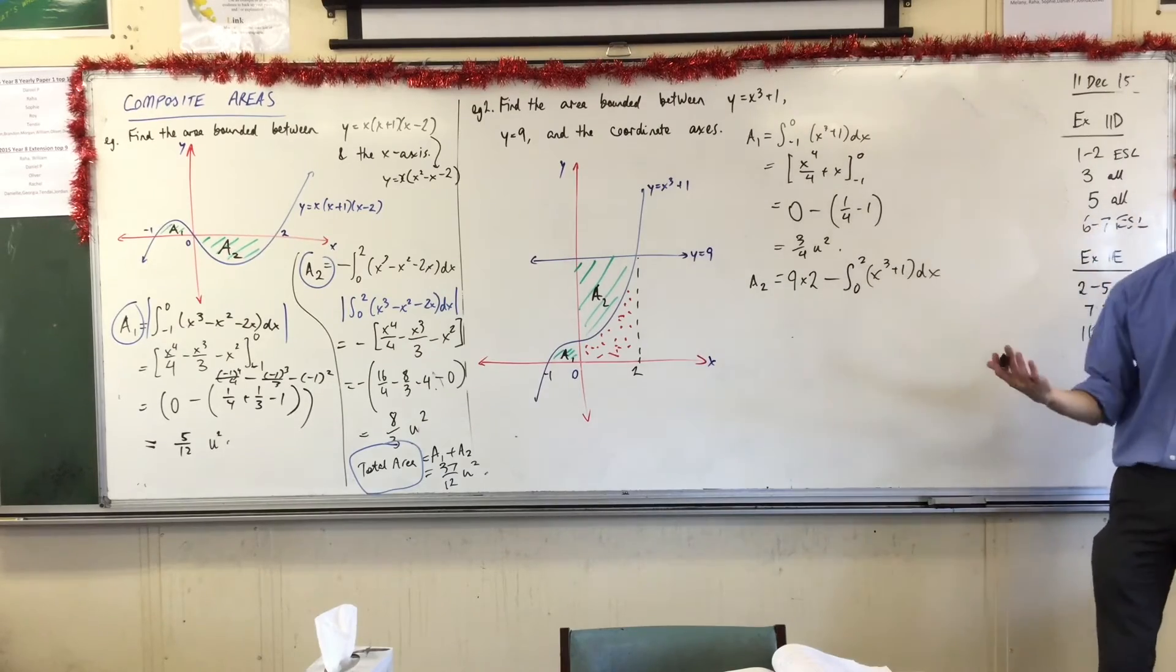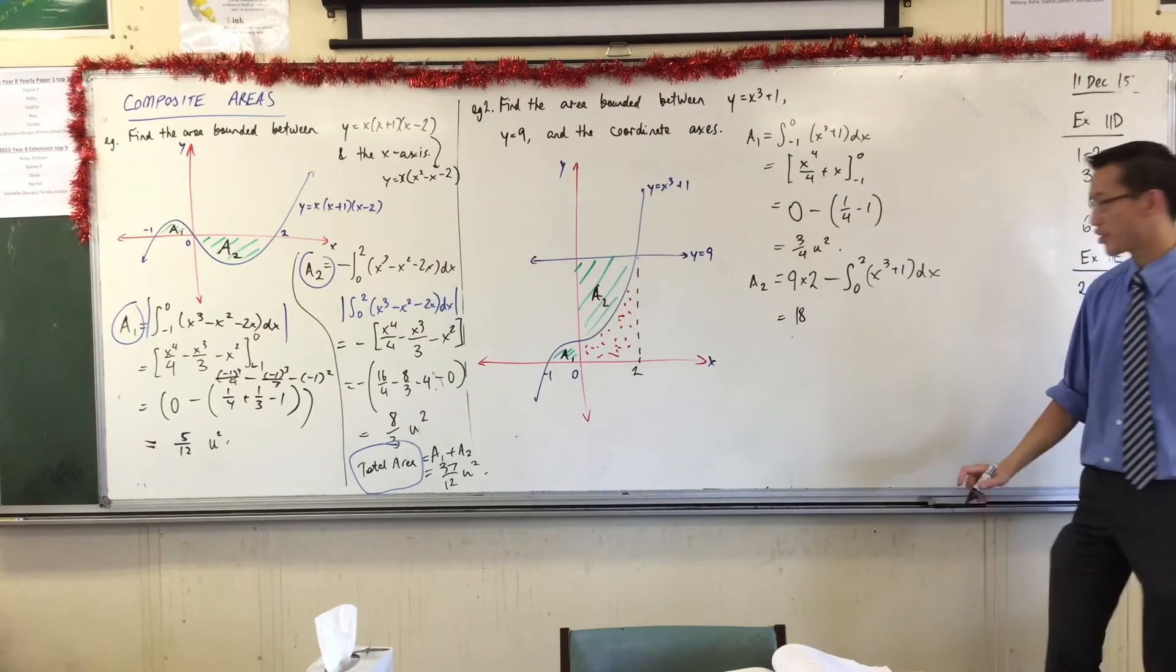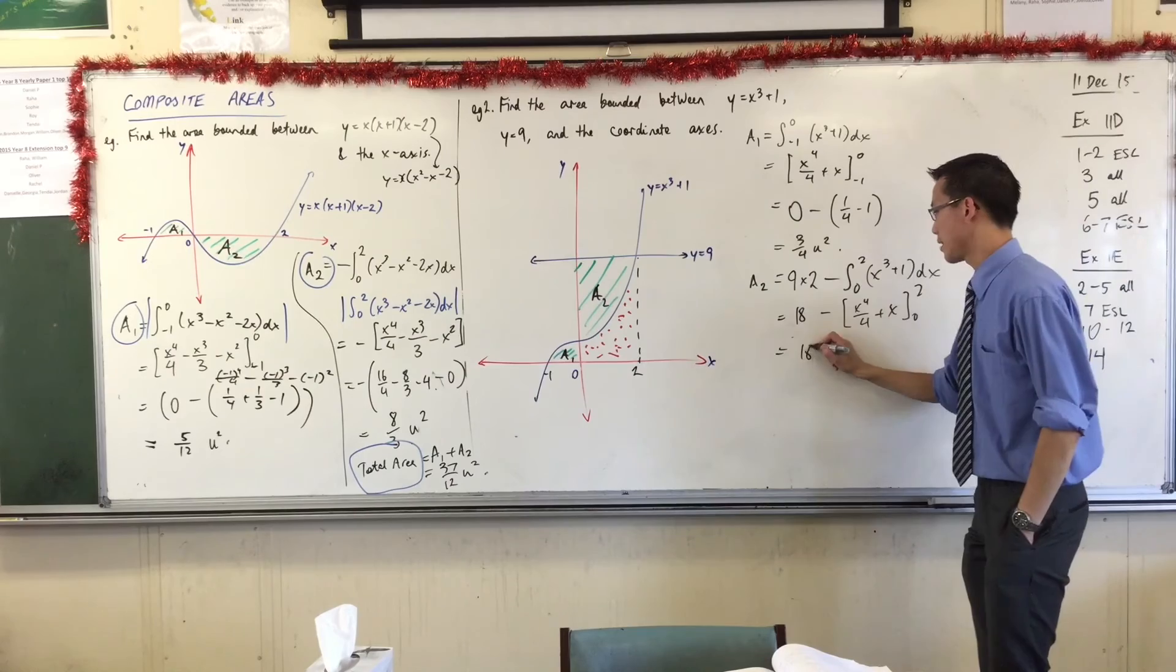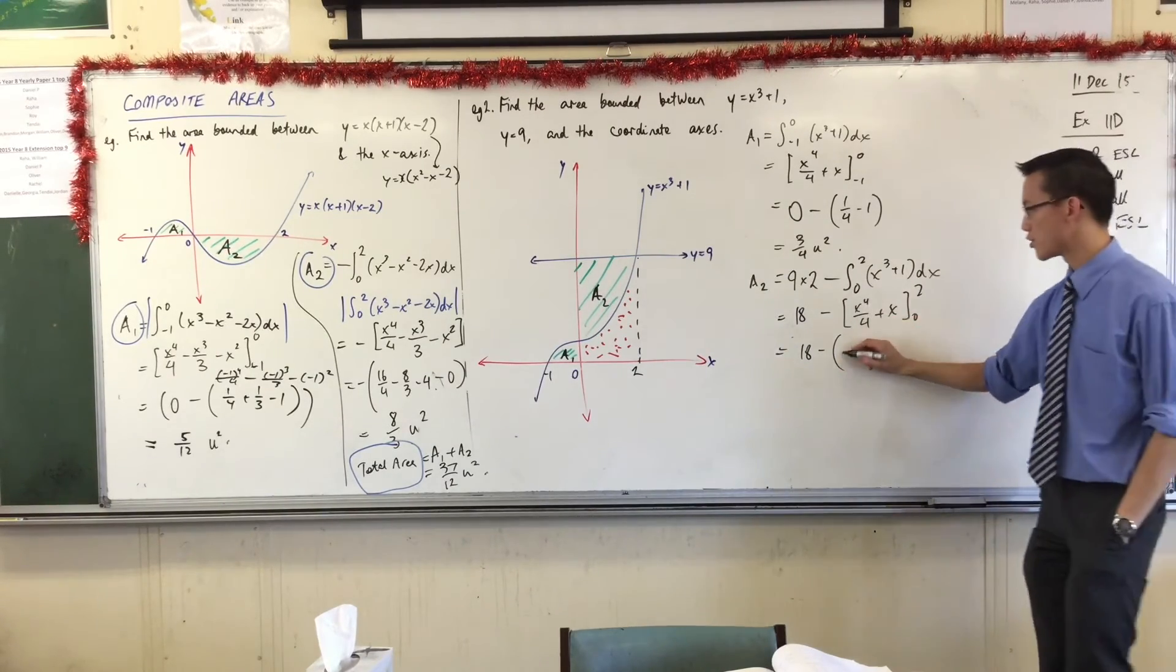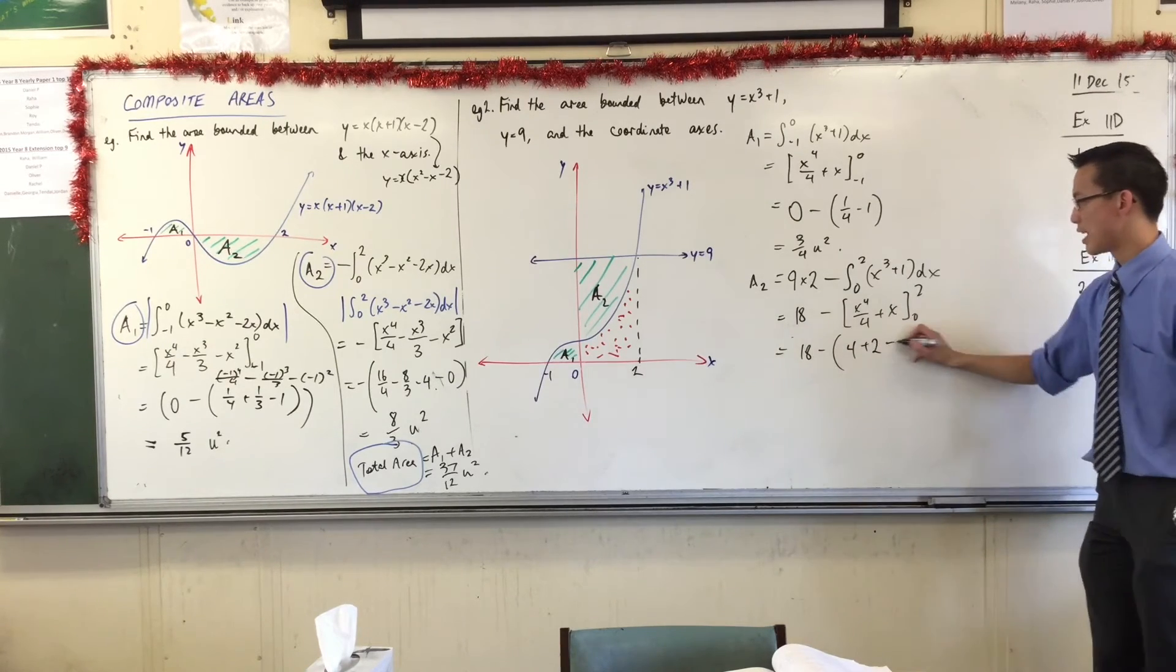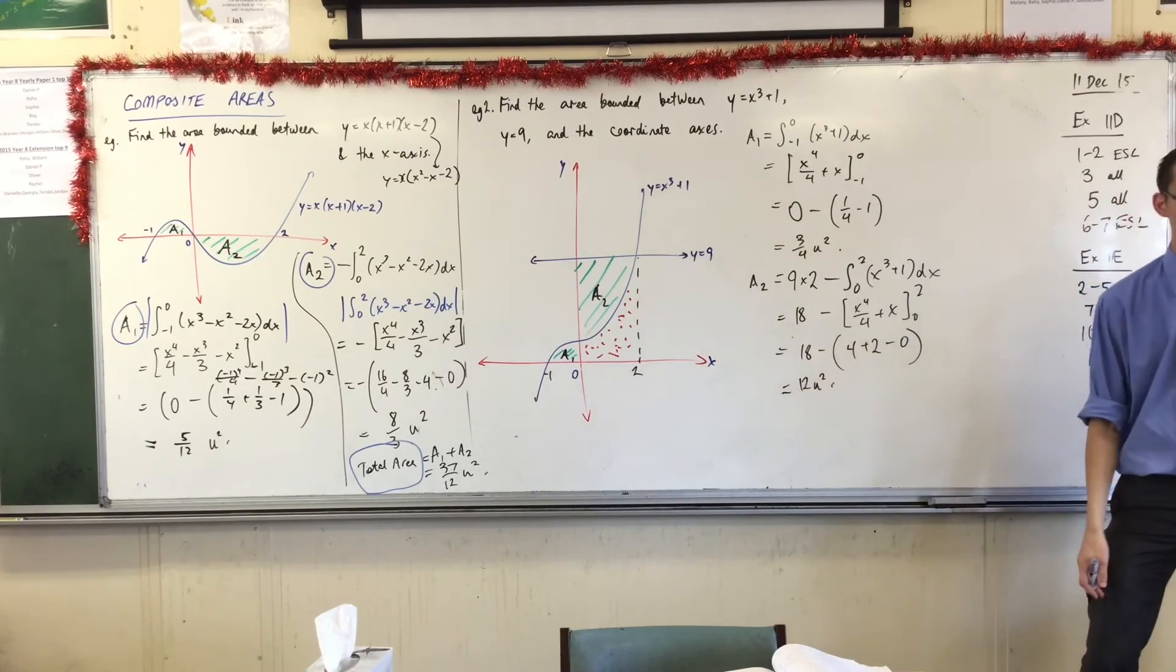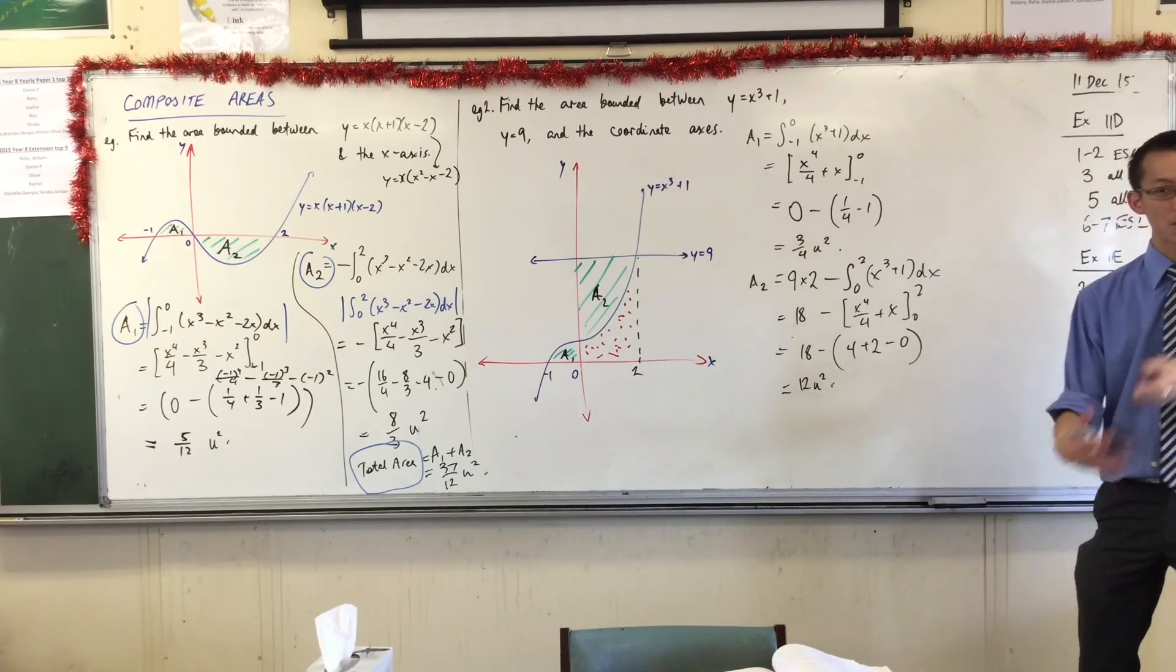Okay, I do have the function in terms of x so I might as well. Okay, all right. Now I've got 18, I've already worked out what the primitive function is, which is nice, so I've got x⁴/4 + x from naught to 2. 18 take away, all right, I'll evaluate at my upper bound first, which is 16/4, which is 4 + 2, take away 0. Yeah, happy times, that's 6. So this is 12.